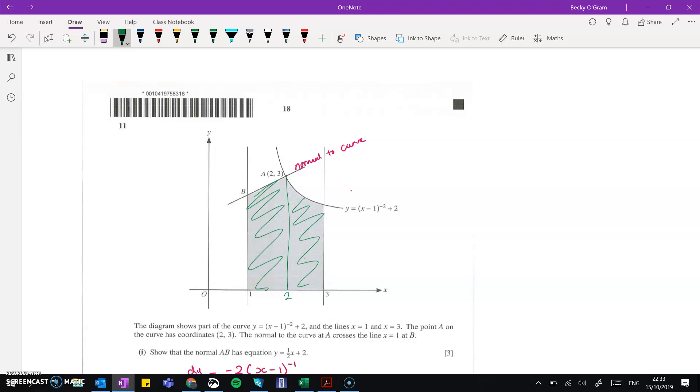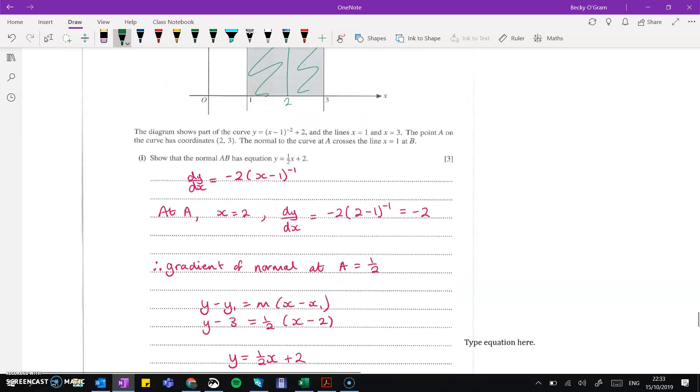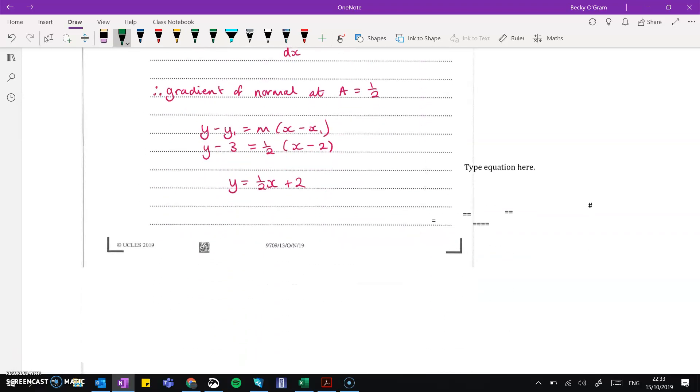So we're going to go 1 to 2 and 2 to 3, because the 1 to 2 we need to do as being under the line of the normal, and the 2 to 3 we need to do as being under the line of the curve here. So we're going to use those two equations, one that we were given and the one that we worked out in part 1 here.